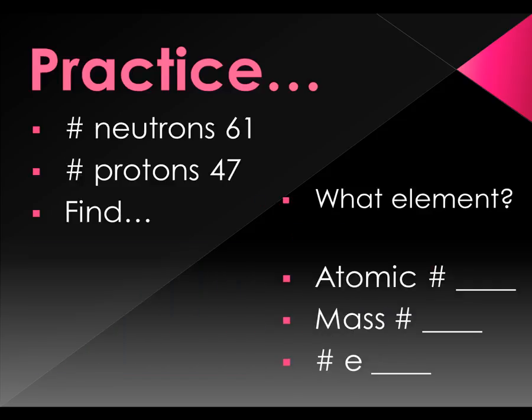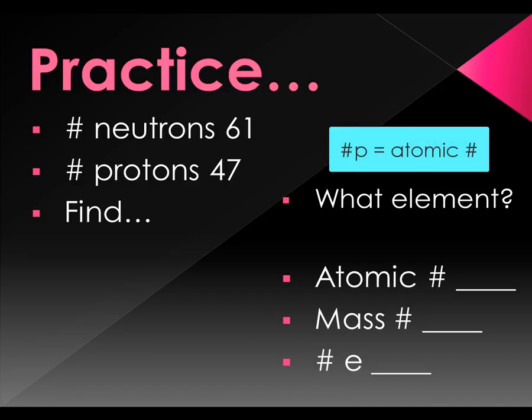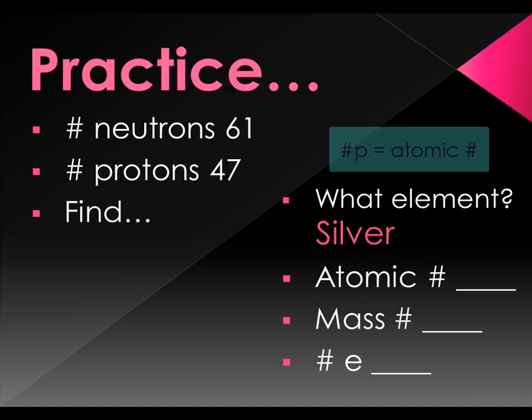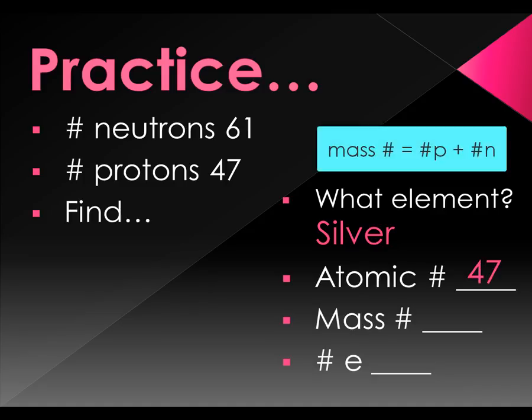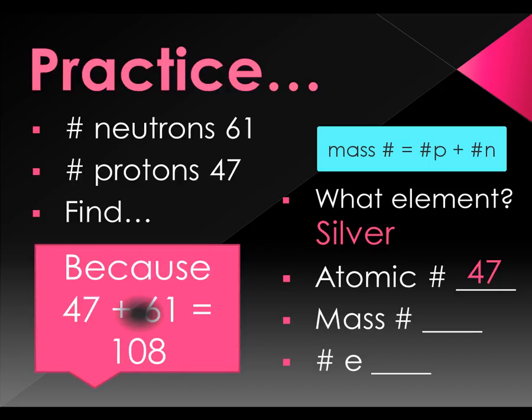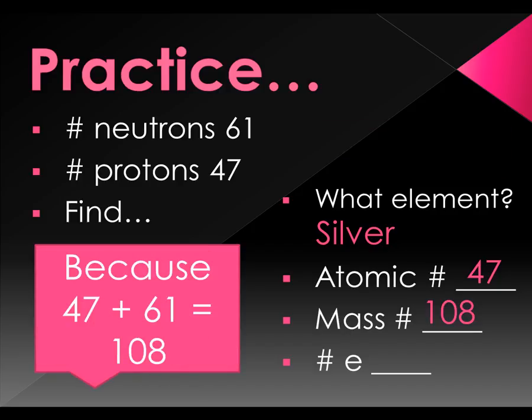Okay, this is the last one I'll do with you. If you want more help after this, just see me in person. I have 61 neutrons and 47 protons. Number 47 on the periodic table is silver. So my atomic number is 47, my mass number, that's protons plus neutrons, is 108. And my electrons are the same as my protons, so 47.